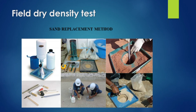We perform the sand replacement method. We use a metal tray with a sand pouring cylinder and a cylindrical calibrating container. This is shown in the slide. If we want to find out the density of the soil, we excavate a hole in the soil.